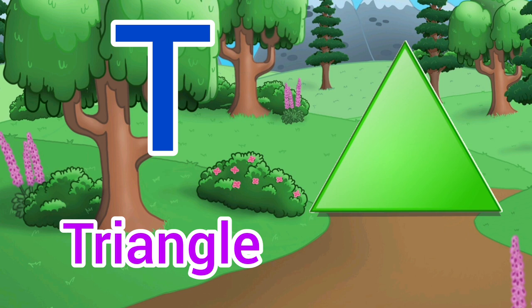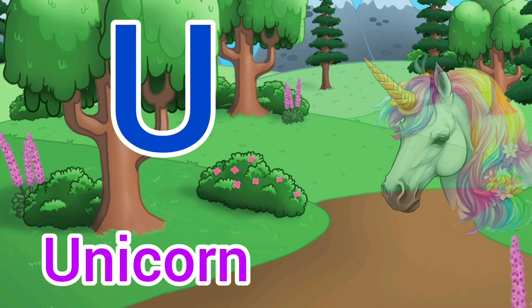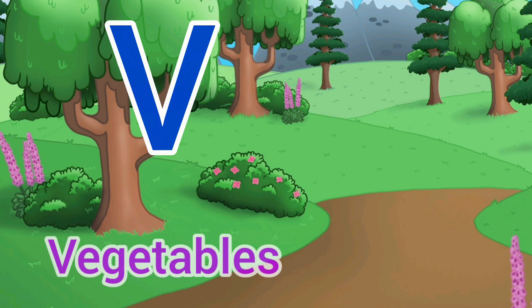U for Unicorn. Unicorn means unicorn. V for Vulture. Vulture means ghosla.